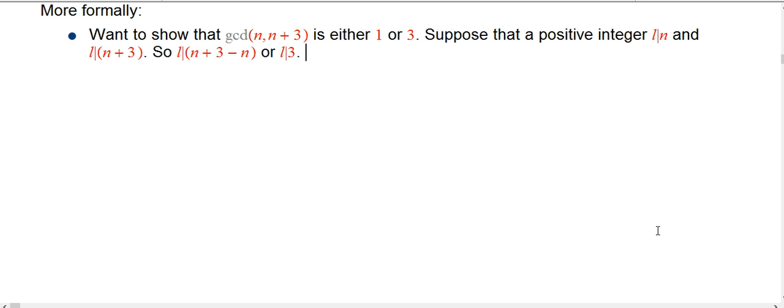In other words, l divides 3. Well, there's not a whole lot of divisors of 3, it's a small number, it happens to be prime, but just because it's small, it just means that l is 1 or 3. So any number that divides into both has to be 1 or 3, and therefore, the greatest common divisor has got to be 1 or 3.